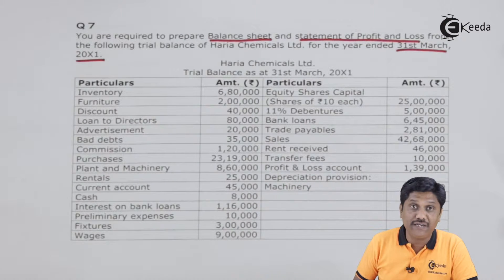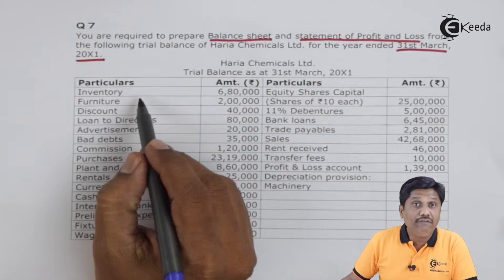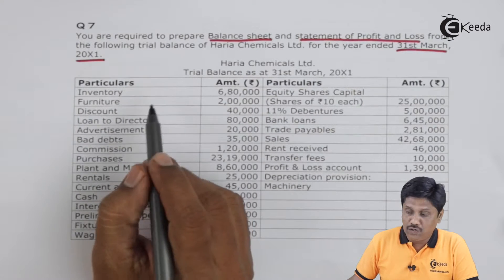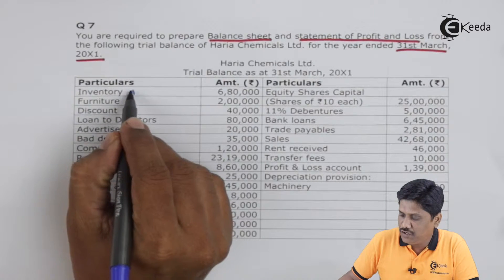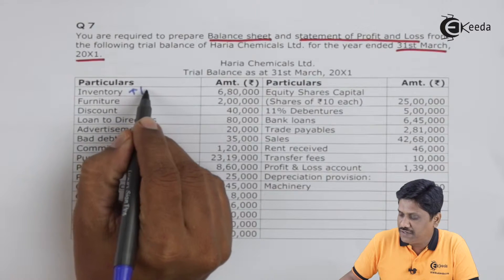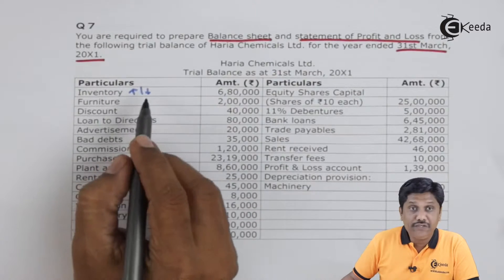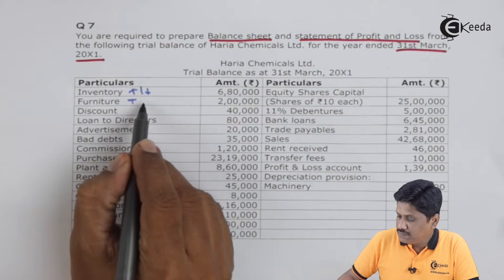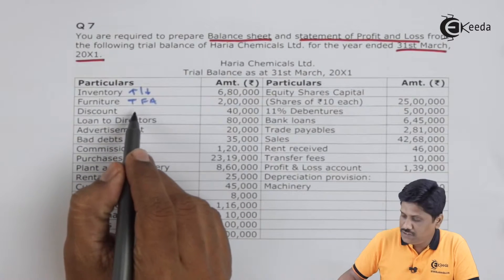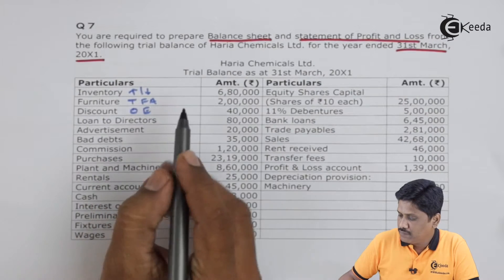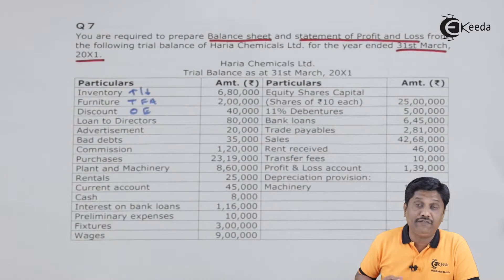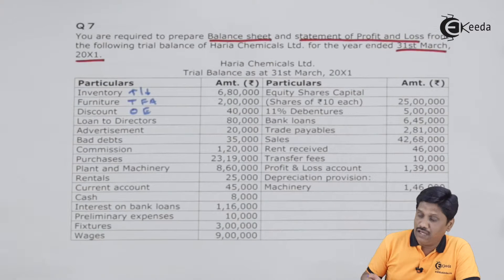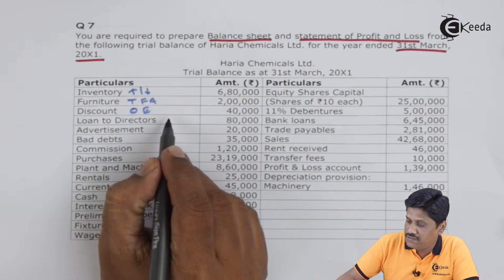Let's go through the trial balance and decide where these amounts can be posted in our final account. Inventory must be your opening stock — it will be taken care of in changes in inventory, that is increase or decrease in inventory. Furniture will be your tangible fixed asset. Discount is your other expense. Loan to director — we give a loan to a director, so we will assume it is short-term loans and advances.